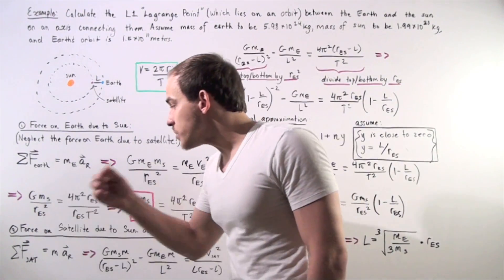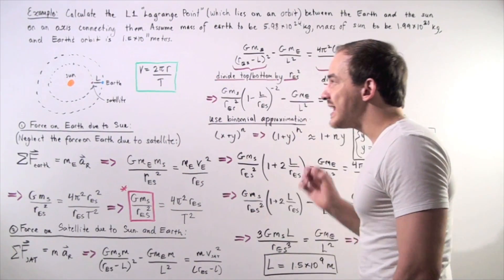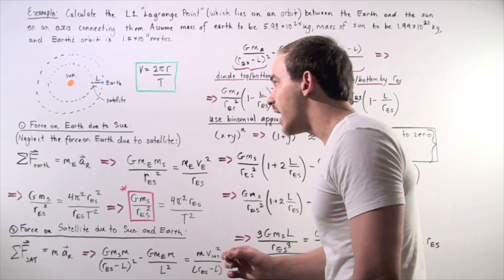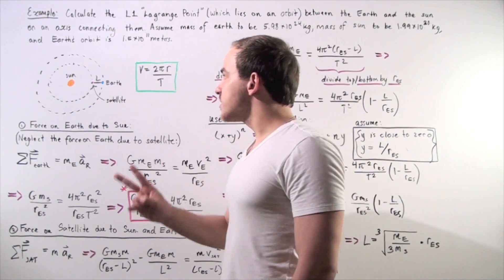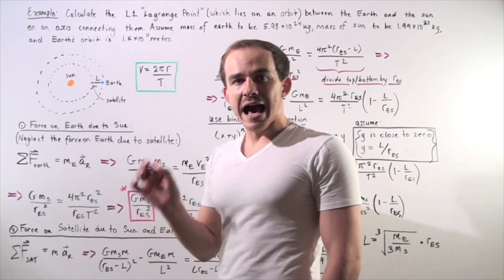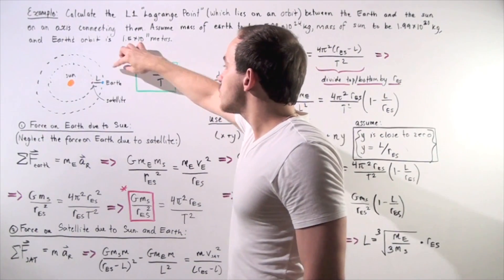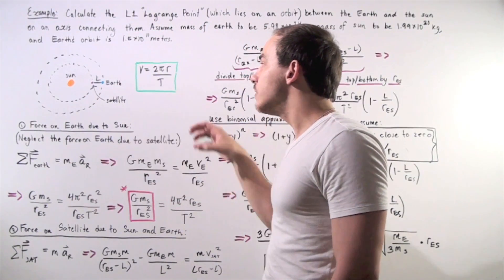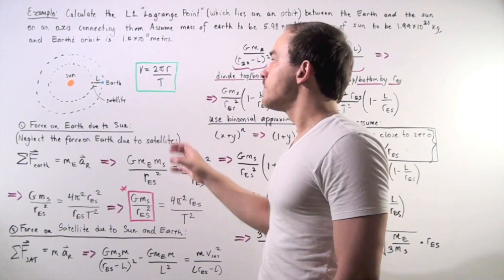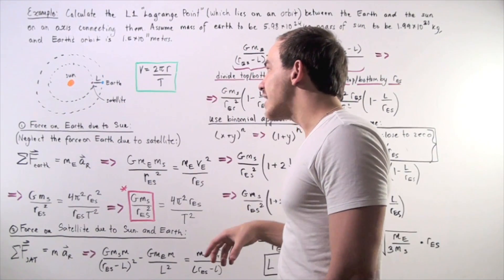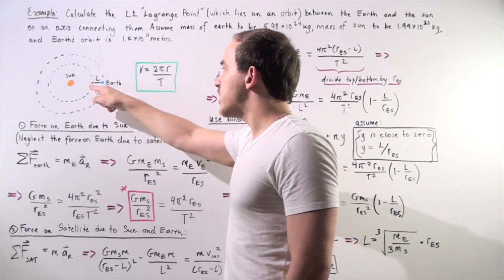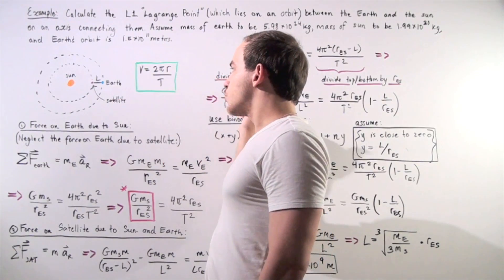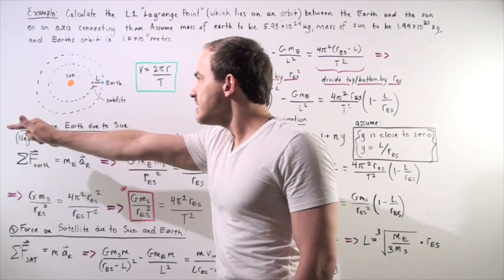Let's go to step two. Now we want to calculate all the forces acting on the satellite. There are two forces: the force created by the Earth on the satellite, and the force created by the Sun on the satellite. Because our object moves in a circular orbit, its acceleration points inward.